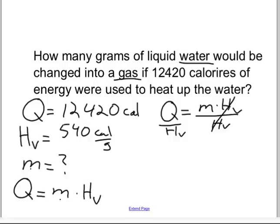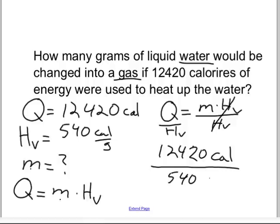Or we can use the triangle of truth, cover up the M, and get the same thing. Here we have, the next step is to plug the numbers. So we have 12,420 calories divided by H sub V, which is 540 calories per gram, and we do the math, and Q is going to end up equaling 23.